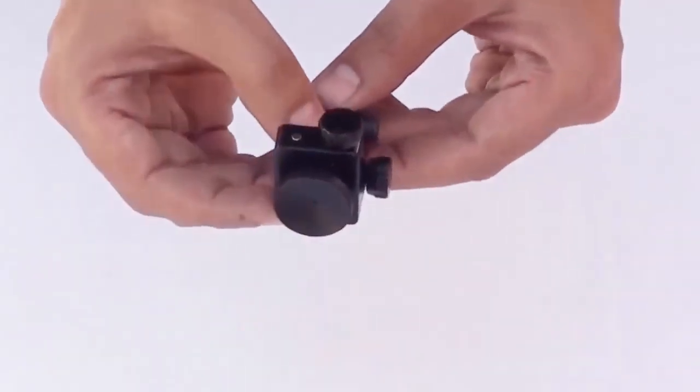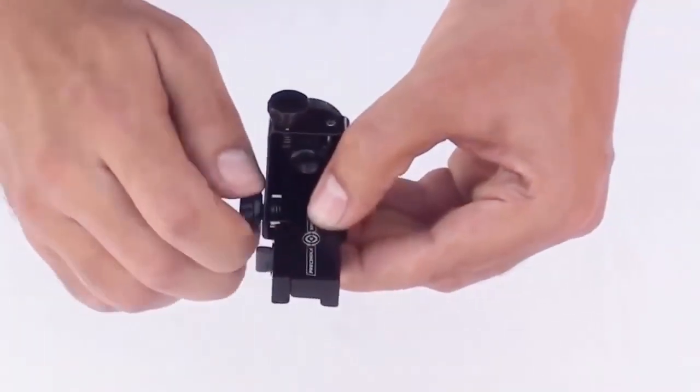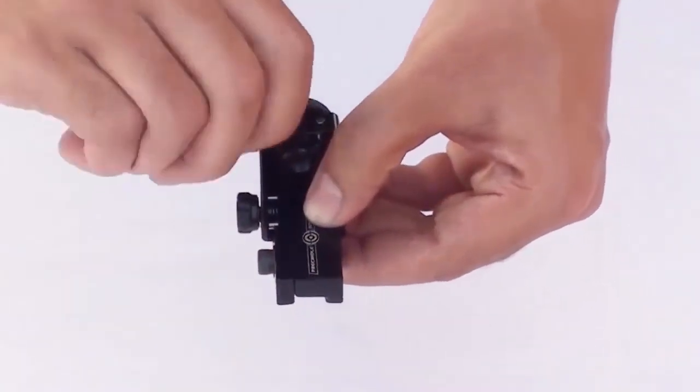This is the rear PeepSight. The windage and the elevation can be adjusted using the knobs as shown.